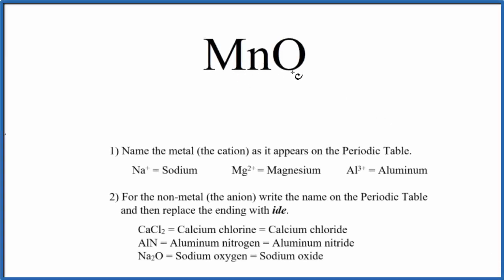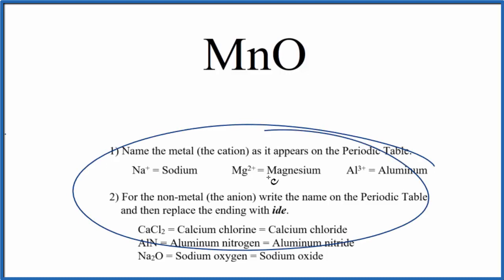To write the name for MnO, we first need to realize we have a metal and a non-metal. So when we have a metal and a non-metal, we're going to treat this as an ionic compound. Specifically, we have just two different elements, so it'll be a binary ionic compound, and we'll use these rules here.